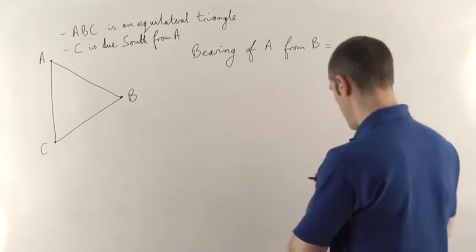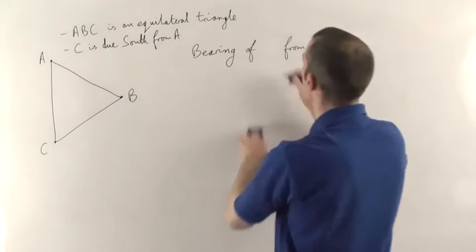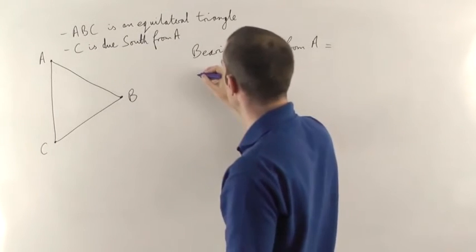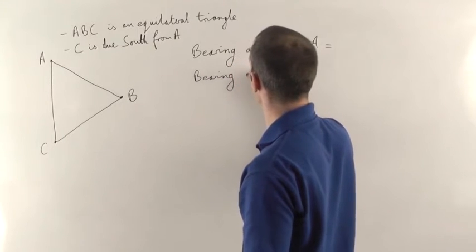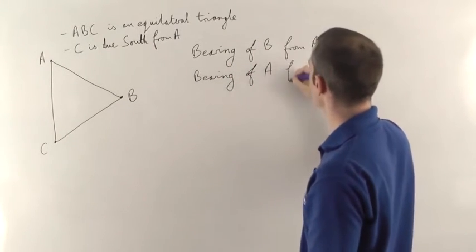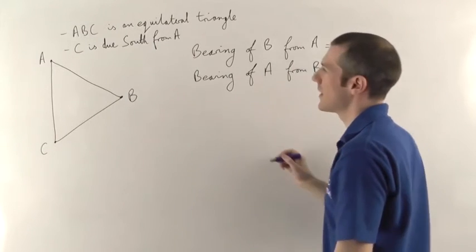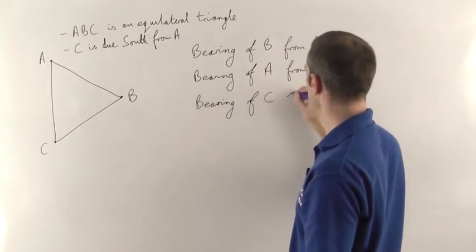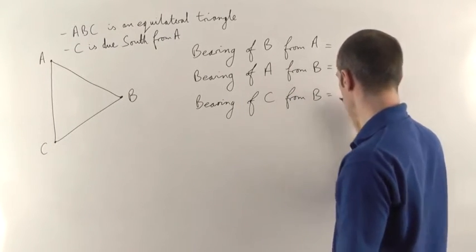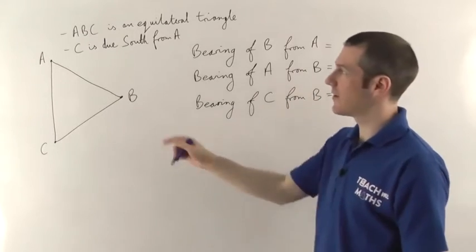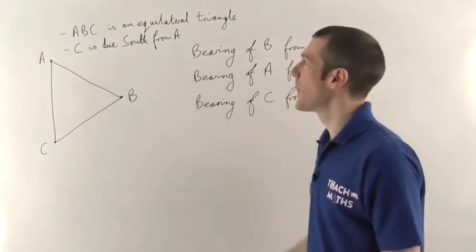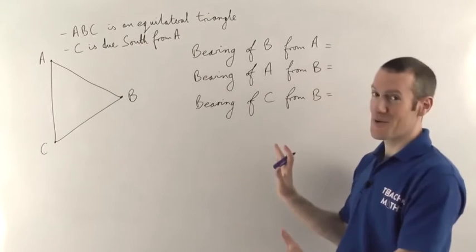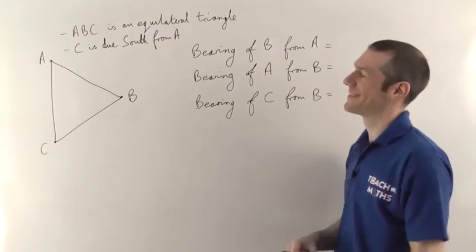There are a few things they want you to find out: first, we want the bearing of B from A; secondly, we want the bearing of A from B; and thirdly, we want the bearing of C from B. On the face of it they haven't given you any angles at all — just that ABC is an equilateral triangle and C is due south from A. Pause if you want to have a go before I show you the solution.